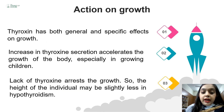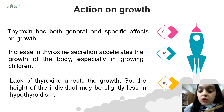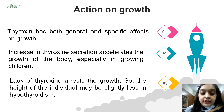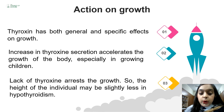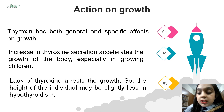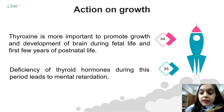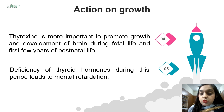Thyroxine has both general and specific effects on growth. Thyroid hormone increases the production of growth hormone and accelerates its function by increasing protein uptake and utilization in skeletal muscle. Increased thyroxine secretion accelerates body growth, especially in growing children, while lack of thyroxine arrests growth, leading to decreased height known as stunting — low height-for-age in children — which is a common symptom of hypothyroidism. Thyroxine is also critical for brain growth and development during fetal life and the first few years of postnatal life; deficiency during this period leads to mental retardation.